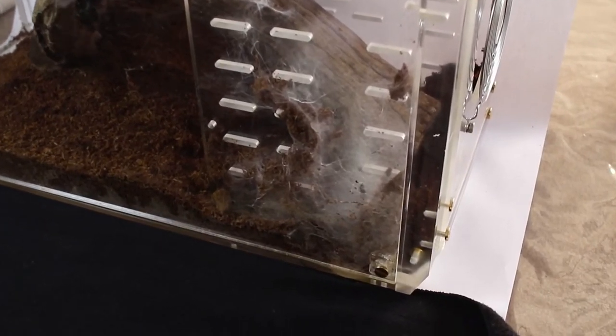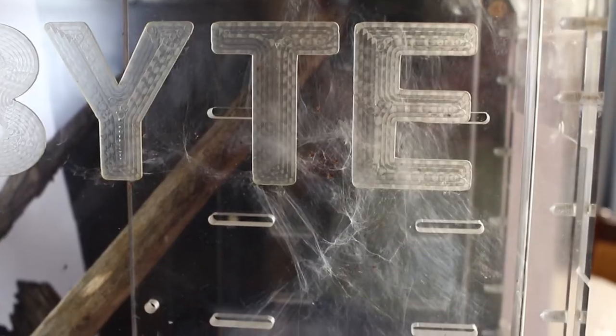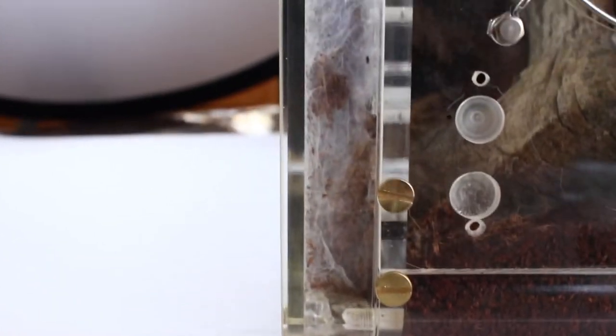Even though I gave this tarantula the perfect hideout in one of the pieces of wood, she decided not to use it and rather stays between the two small pieces of perspex in the front. As you can see she's webbed it up completely and here at the bottom is where she stays during the day. At night she roams around throughout the entire enclosure.